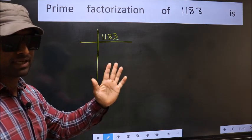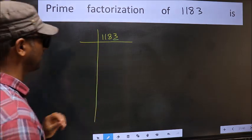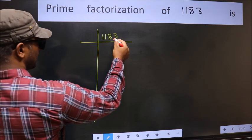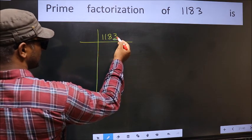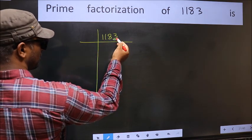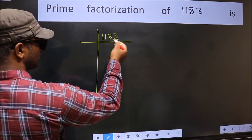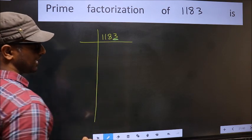Next, prime number 5. Over here the last digit is neither 0 nor 5. So this is not divisible by 5.